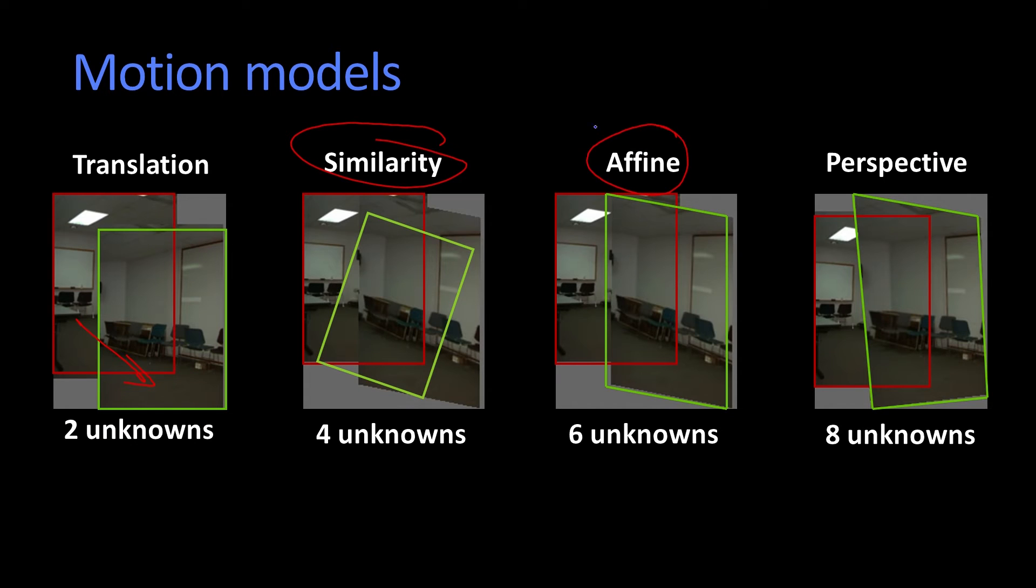Much more interesting is what's referred to as affine. I have this rectangle, and when I move it, I can translate, rotate, skew. And so parallel lines remain parallel, and I have six unknowns.